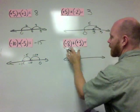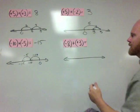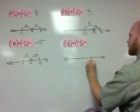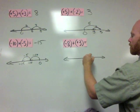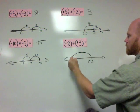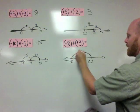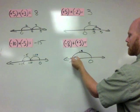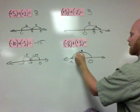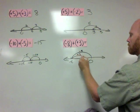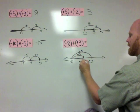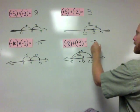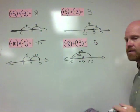Down here, negative 8 plus positive 3: we're going to start at 0. The first hop puts us way to the left at negative 8, and the second hop of positive 3 puts us at negative 5. So this answer is negative 5.